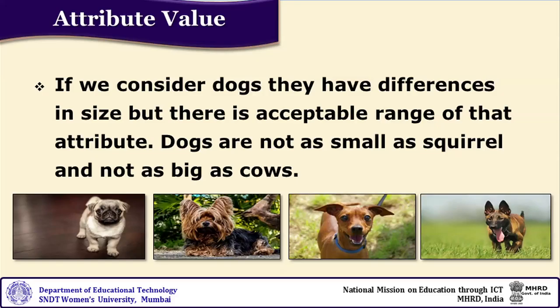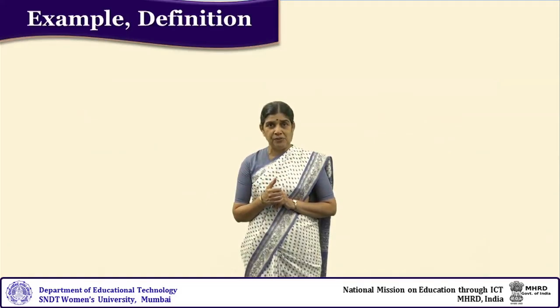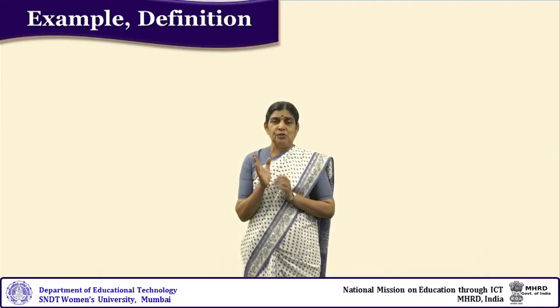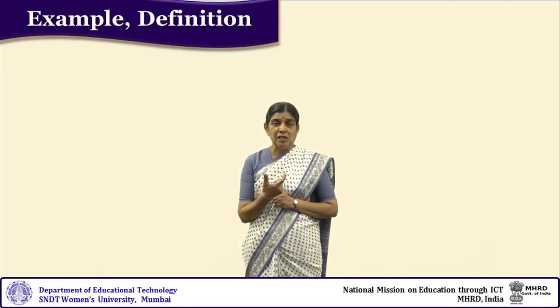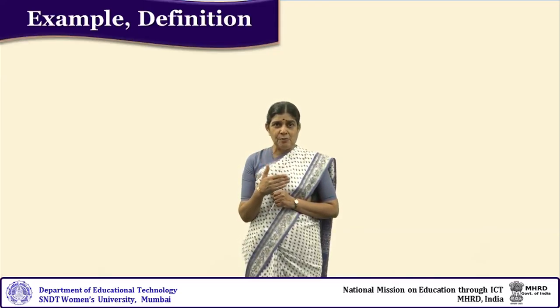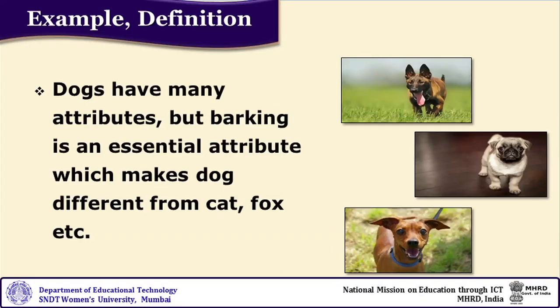For each concept there are many examples. Those examples which have the same essential attributes and essential attribute value form the positive examples of the concept. If the essential attributes are missing, then they are called non-examples. Dogs have many attributes, but barking is an essential attribute which makes a dog different from a cat, fox, and so on.